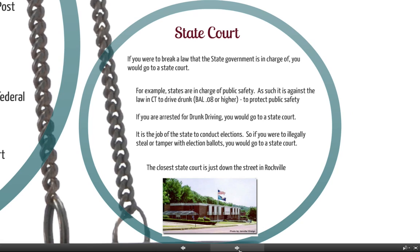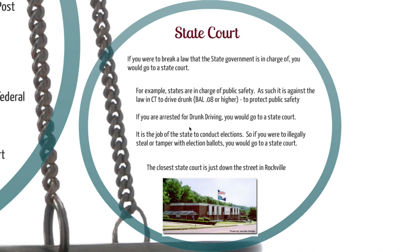The other type of court is called a state court. You go to state court if you break a state law. For example, if you drive drunk, you would go to a state court, because it is the state's job to protect public safety, so they make the law about drunk driving. Similarly, it is the state's job to conduct elections. So if you were to steal ballots, tamper with the election, or try to do some kind of fraud, you would go to a state court, because the state is in charge of the election.